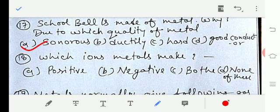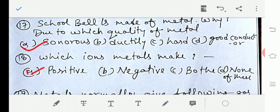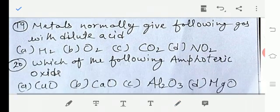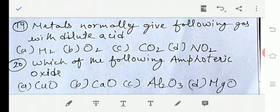Let's move to question number 19: Metals normally give following gases with dilute acid. Option A H2, option B O2, option C CO2, option D NO2. The answer is option number A, H2.